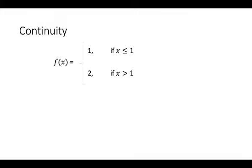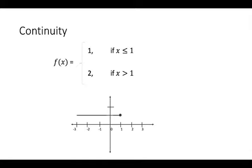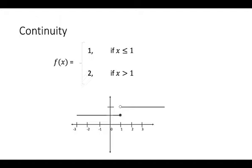Let us take a function: f(x) = 1 if x ≤ 1, and f(x) = 2 if x > 1. If I ask you to draw the graph of this function, we can see that at x ≤ 1, f(x) = 1, and at x > 1, f(x) = 2. Can you draw this graph without lifting the pen or pencil? You will say no.